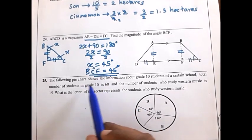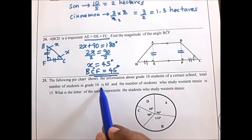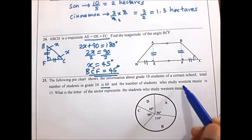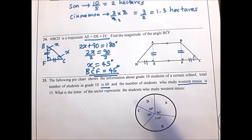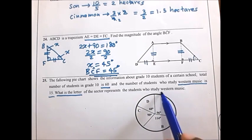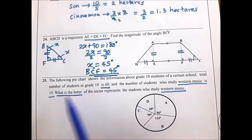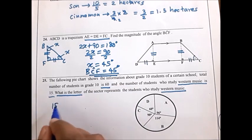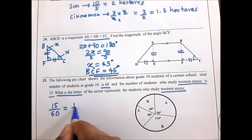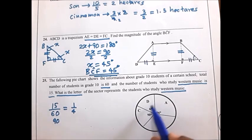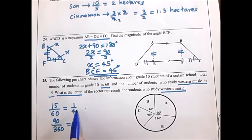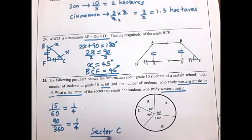Look at the 25th question. A pie chart shows information for grade 10. There are 60 students and 15 study Western music. 15 over 60 in simplest form is 1 over 4. Looking at the sector with angle 90 degrees, 90 over 360 simplifies to 1 over 4. These two are the same. So sector C represents Western music. The answer is sector C.